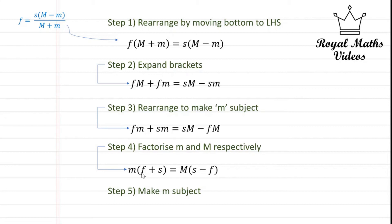So now we have lowercase m and uppercase M with their own small expressions where lowercase m is times bracket f plus s which is equal to uppercase M times s minus f.